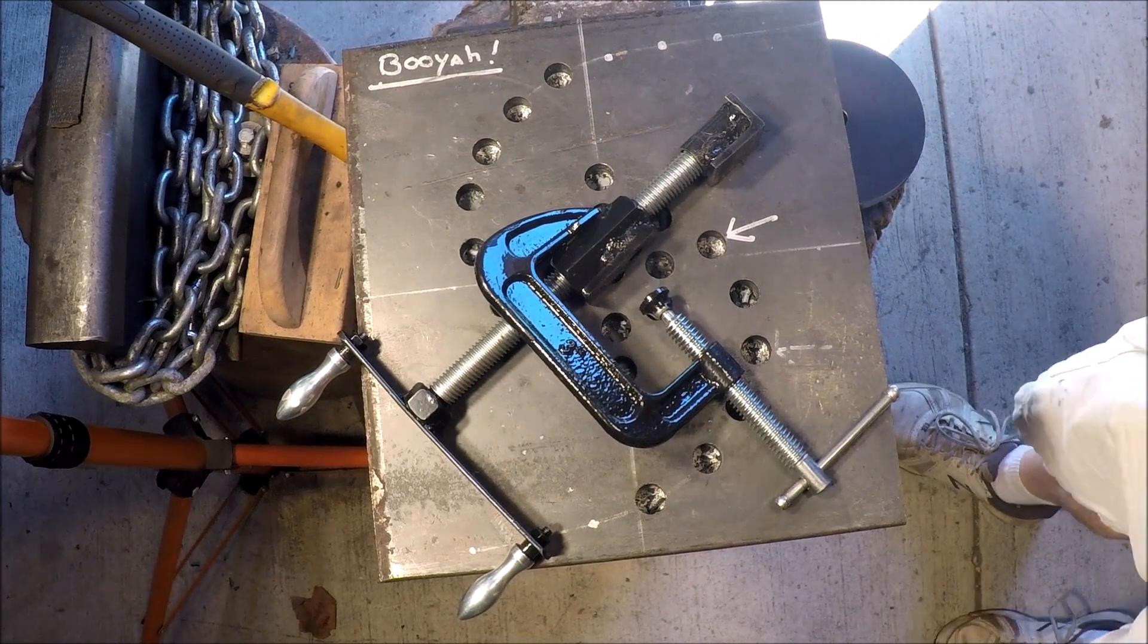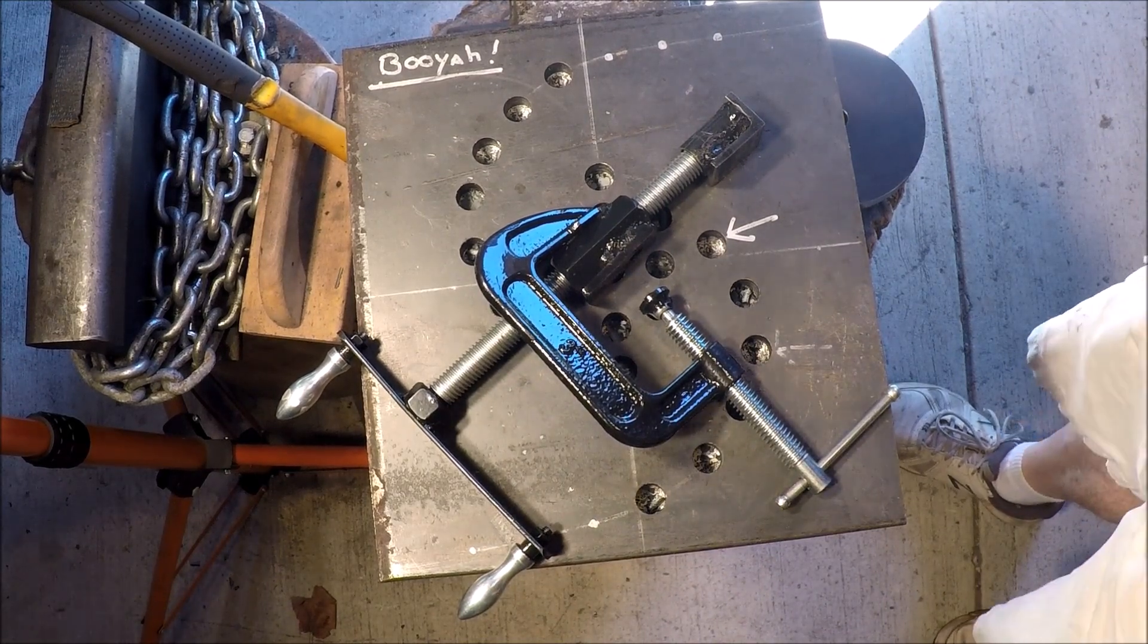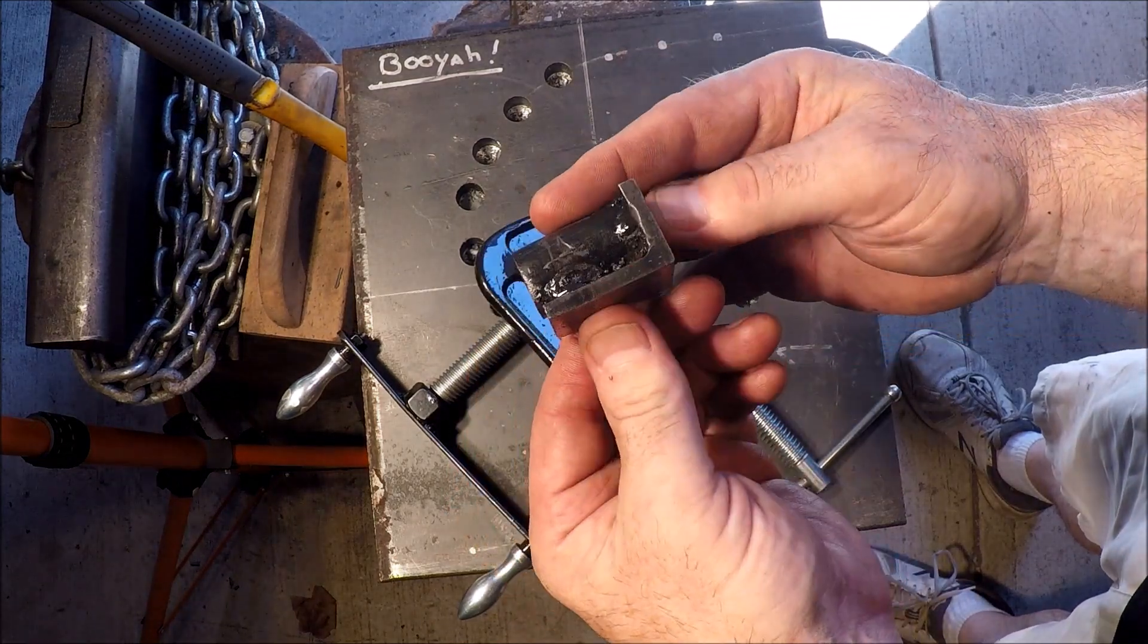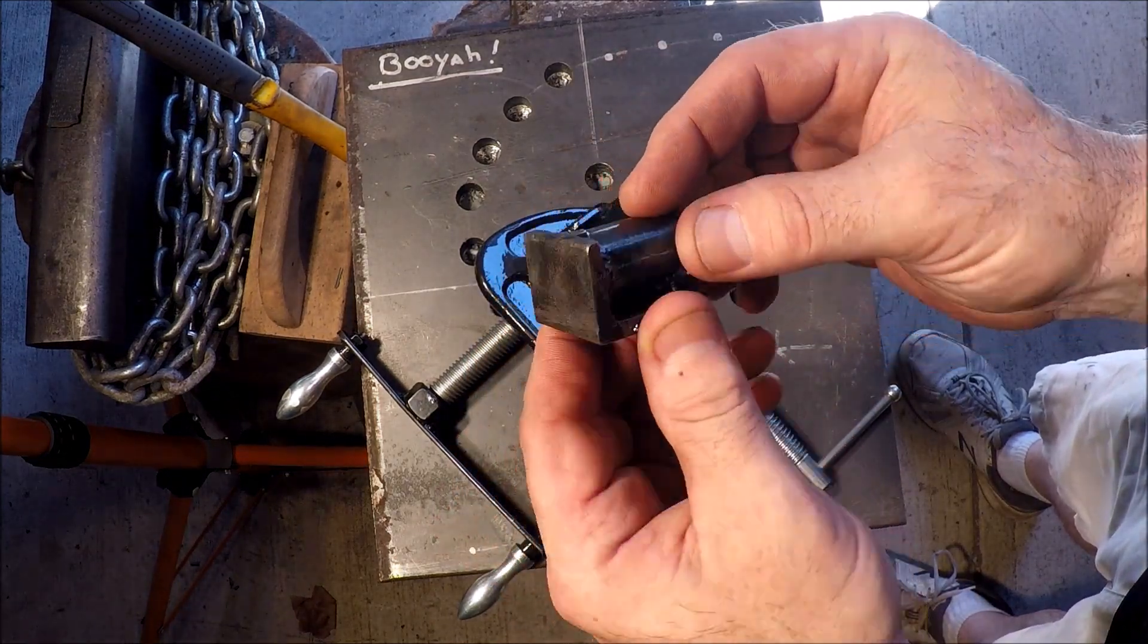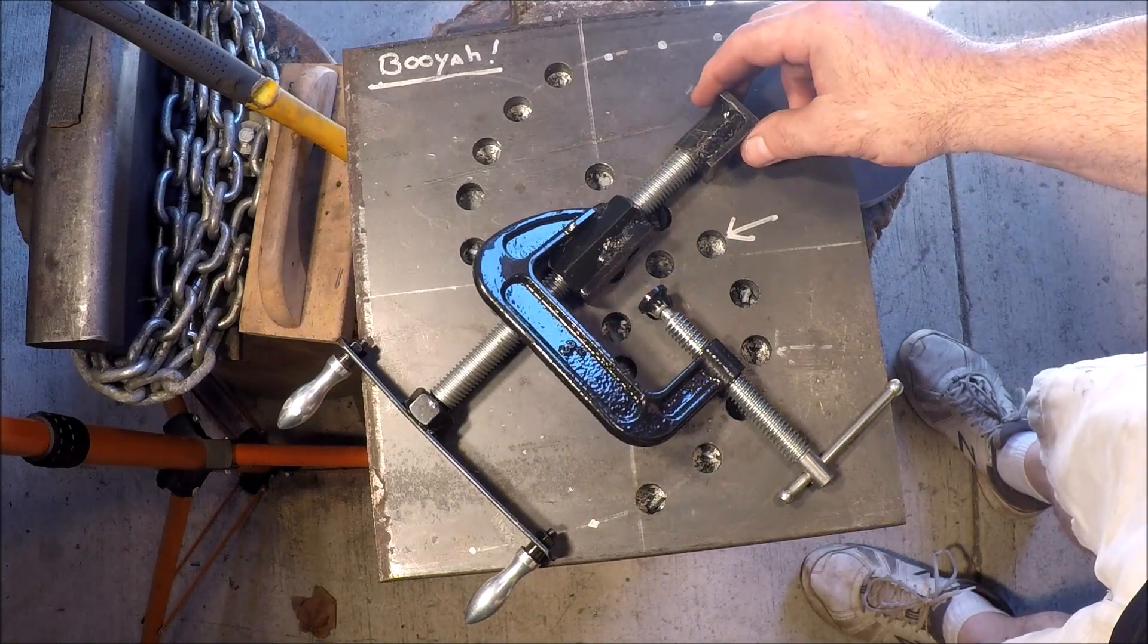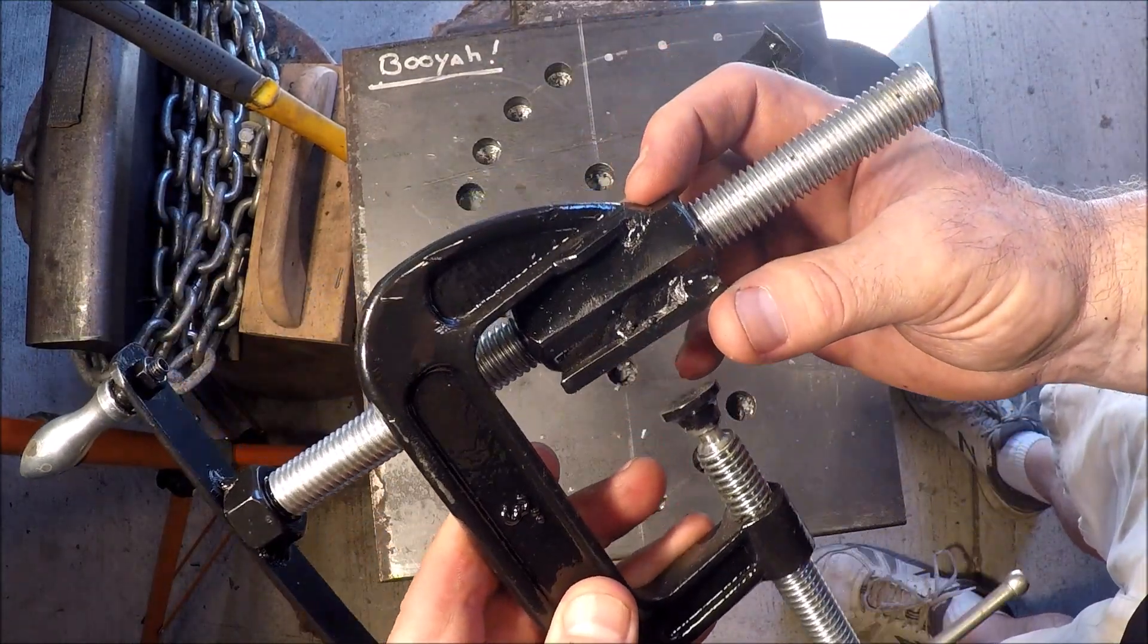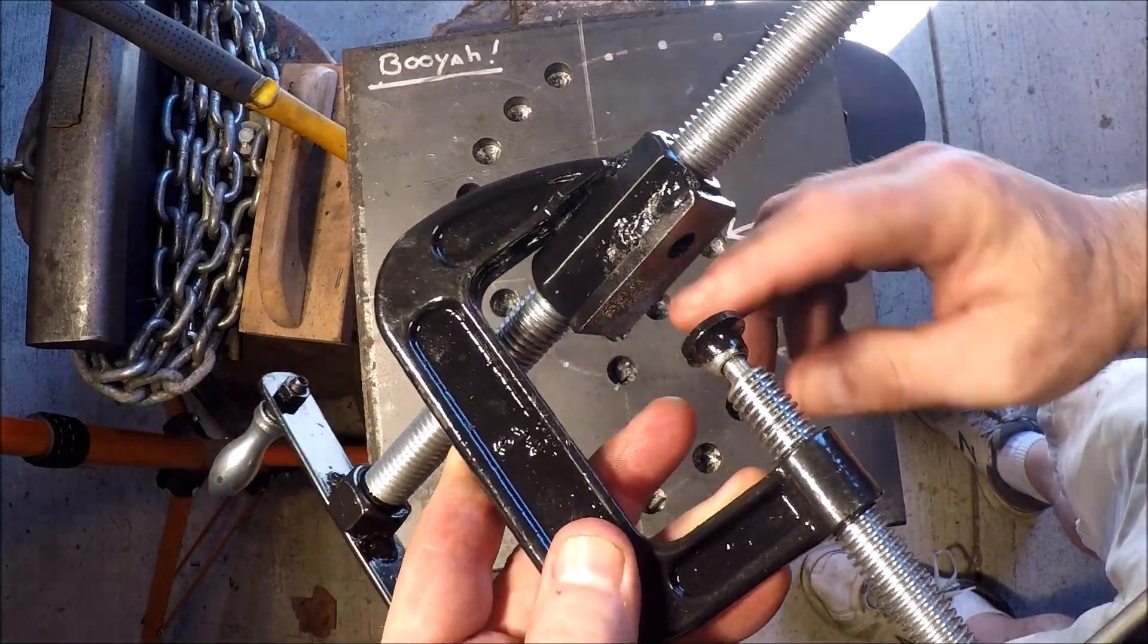So taking another look at this tool: you've got the stop, which is just a little piece of pipe that fits around the five-eighths inch threaded rod and it's welded to a piece of angle. And then there's the nut for the five-eighths rod.